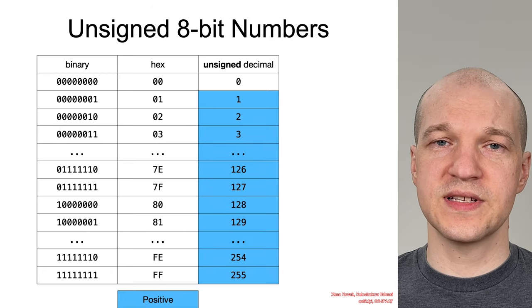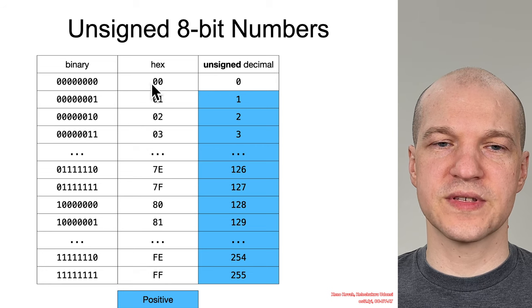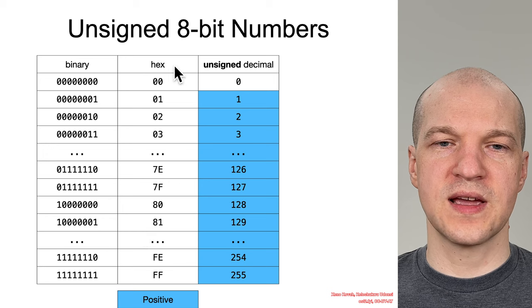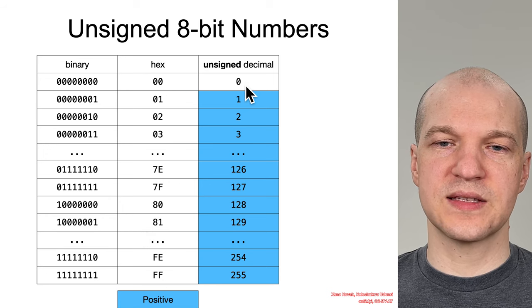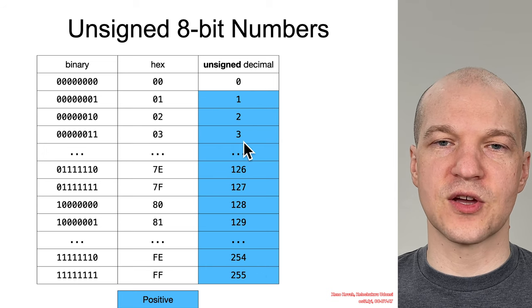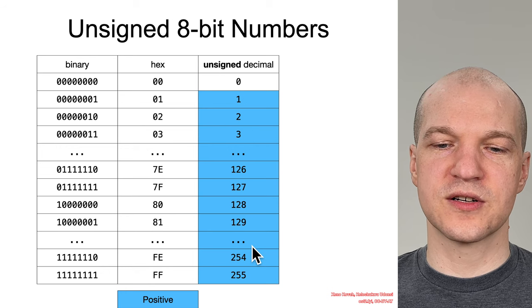So for instance, if we had an 8-bit value like a char, the available values are binary 8-bit, 0-0-0 to all ones, hex 0-0 to all f's, and unsigned decimal 0 up through 255. So when it's an unsigned 8-bit number, these values are all positive, 0 to 255.